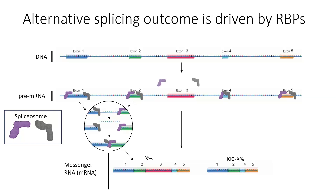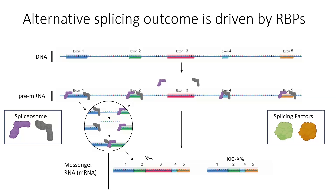However, there are RNA binding proteins that are splicing factors and can mediate this process by either recruiting or preventing the spliceosome machinery from coming to exons to modulate their use. The alternative use of these exons within a final mature messenger RNA generates different mRNA isoforms that could be translated into different protein products.